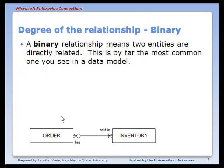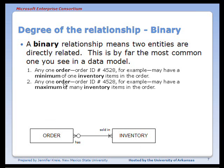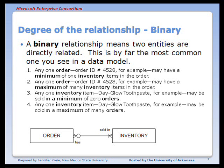A binary relationship involves two entities directly related, and this is by far the most common type seen in a data model. For example, any one order — such as order ID 4528 — may have a minimum of one order item and a maximum of many items. Reading from inventory to order: any one inventory item, such as the Dayglo toothpaste, may be sold in a minimum of zero orders, meaning it might not have been sold yet, and a maximum of many orders.